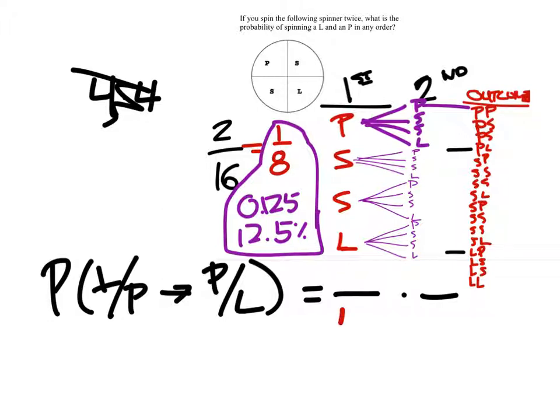For the first spin, you've got four possible outcomes. And for the second spin, you've got four possible outcomes. That's good. The question that happens is for the first spin, I can either get a P, an L, or a P, right? So that's two possible outcomes out of the four.